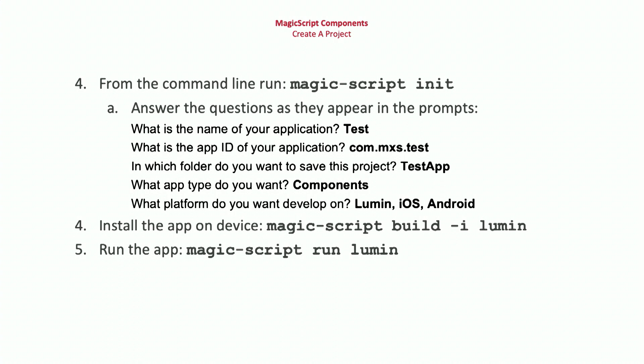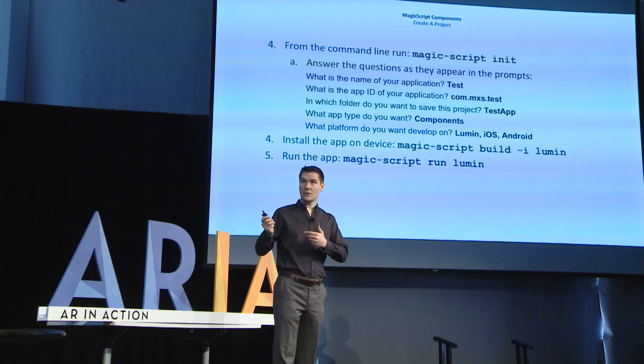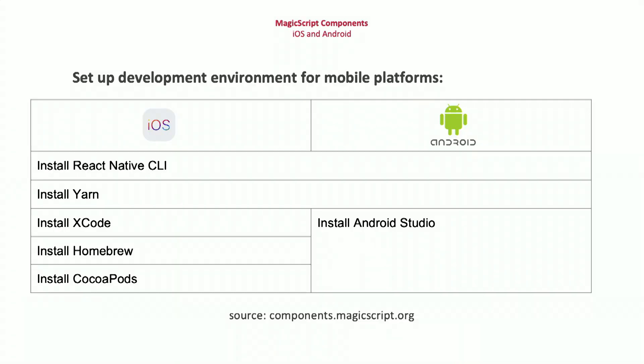After that, it's a simple build command — MagicScript build — where you specify the target. I have targets for Lumin shown here; iOS and Android work as well. The dash I option performs an installation of the application as soon as the compile process finishes, installing it onto a device. And last, to get it running on the screen, is MagicScript run, again specifying the target. To get iOS and Android working, you need a couple of other dependencies: React Native CLI and Yarn for both platforms — Yarn being an alternative package manager that works better with React Native CLI. For iOS development you need Xcode, Homebrew, and CocoaPods; for Android it's Android Studio. These are basically the same dependencies you'd need for React Native development anyway.